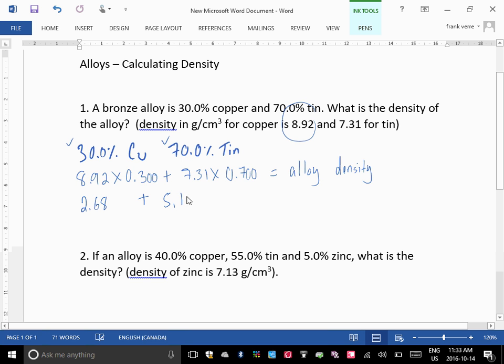5.117, so 5.12. Now, that adds up to the alloy's density. So what does that end up being? That ends up being what? 7.80 grams per centimeter cubed is the density of bronze in this case.